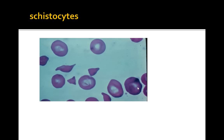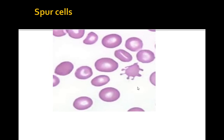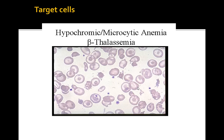Here are schistocytes — similar to helmet cells — seen in DIC, TTP, HUS, and mechanical valve patients. Burr cells have even, regular projections and are common in uremia patients. Spur cells have irregular projections and are common in liver disease.